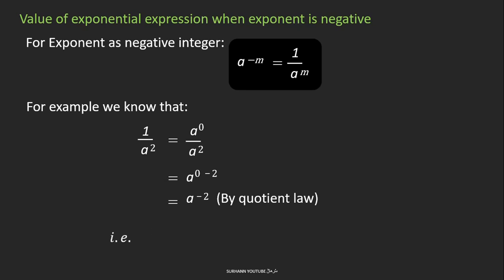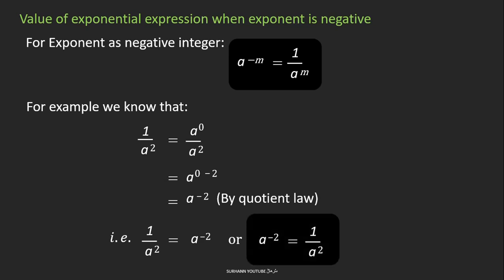Simply note: if the numerator is 1, just bring the denominator up and change the sign of its power. And if the denominator value is 1, just shift the upper value to the bottom and change the sign of the power. Remember this — we will use these properties to solve the exercise.